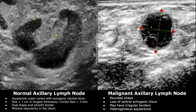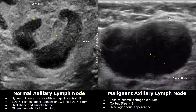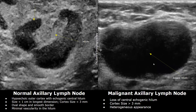The lymph node may also have irregular borders. This is another image of a malignant axillary lymph node — the central echogenic hilum is absent, and there is increased cortical thickness. The main feature is the loss of the central echogenic hilum.